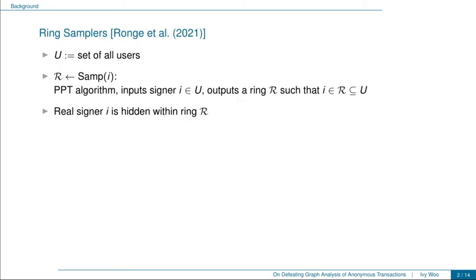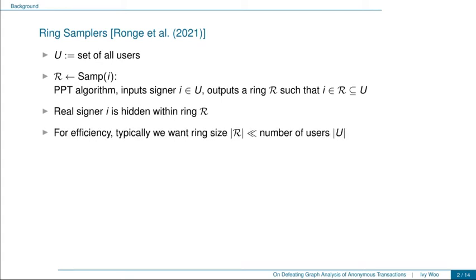To formalize this concept, in a previous work, Gronge et al. introduced the notion of ring samplers. Let U be the set of all users. A ring sampler is a probabilistic polynomial time algorithm which inputs a signer i in U and outputs a ring R such that i is in R and R is a subset of U. We see that the real signer i is hidden within the ring R. Typically, for efficiency reasons, we want the ring size to be much smaller than the number of users.